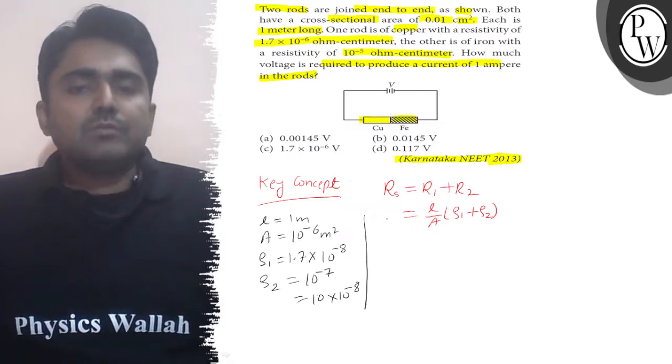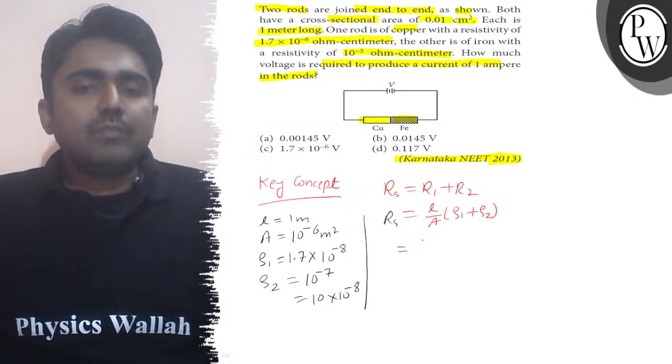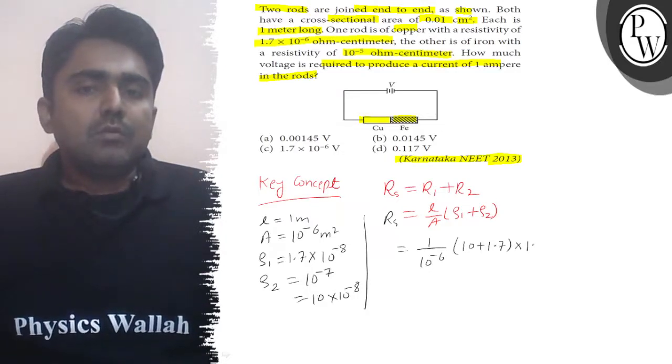Now we'll put the given information. 1/(10⁻⁶) × (10 + 1.7) × 10⁻⁸. So here the powers cancel and it will be 11.7 × 10⁻². So we can see that is 0.117. This is the resistance.